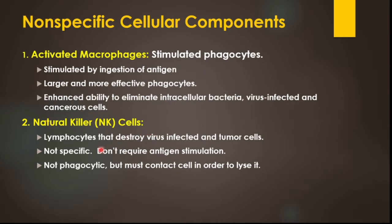There are natural killer cells — lymphocytes that destroy viral-infected cells and tumor cells. They provide non-specific immunity. It is not necessary that the antigen be specific to activate natural killer cells; natural killer cells can destroy any antigen and can be activated against it.